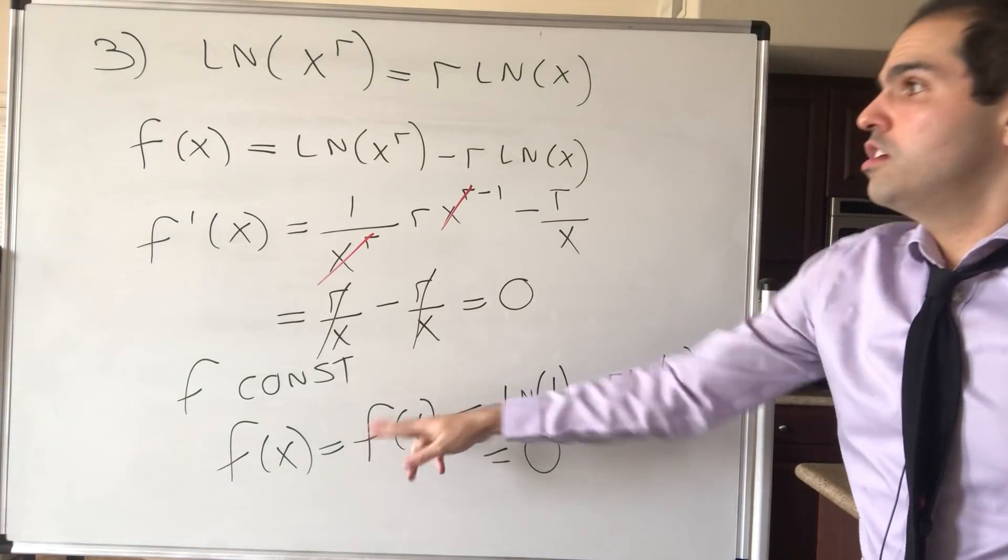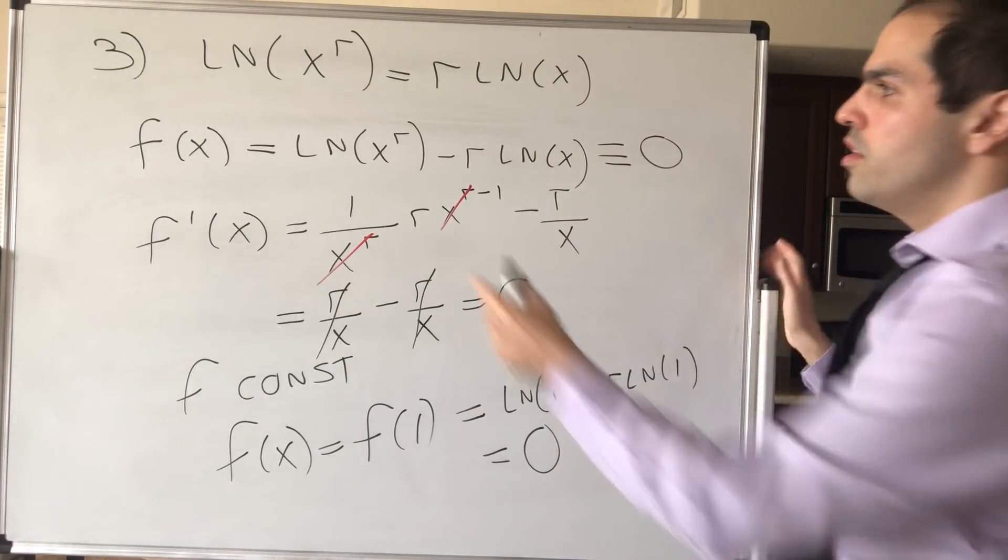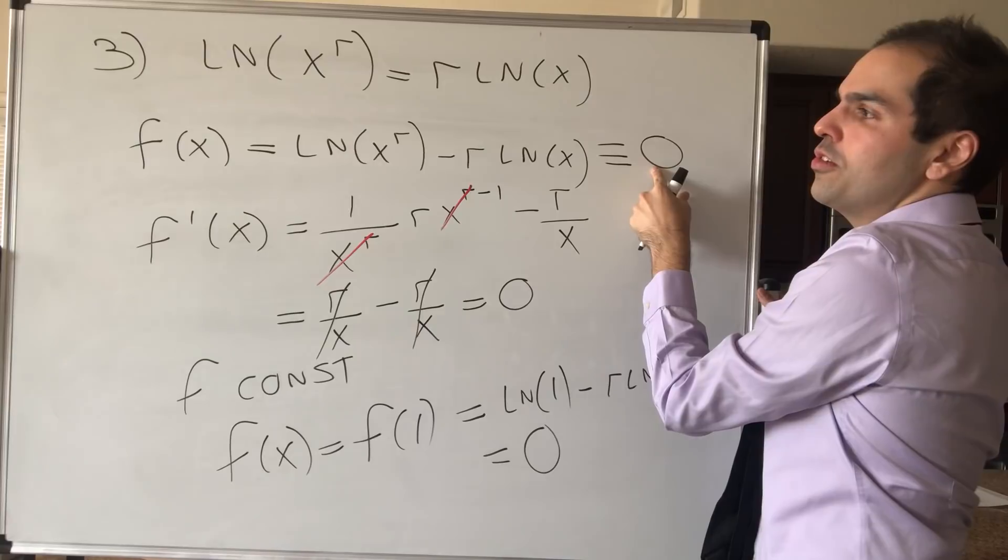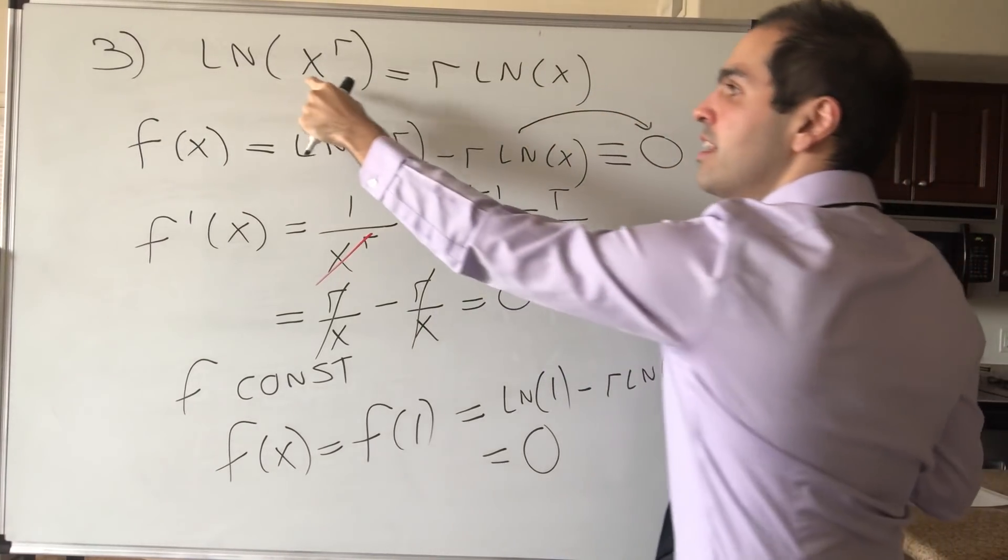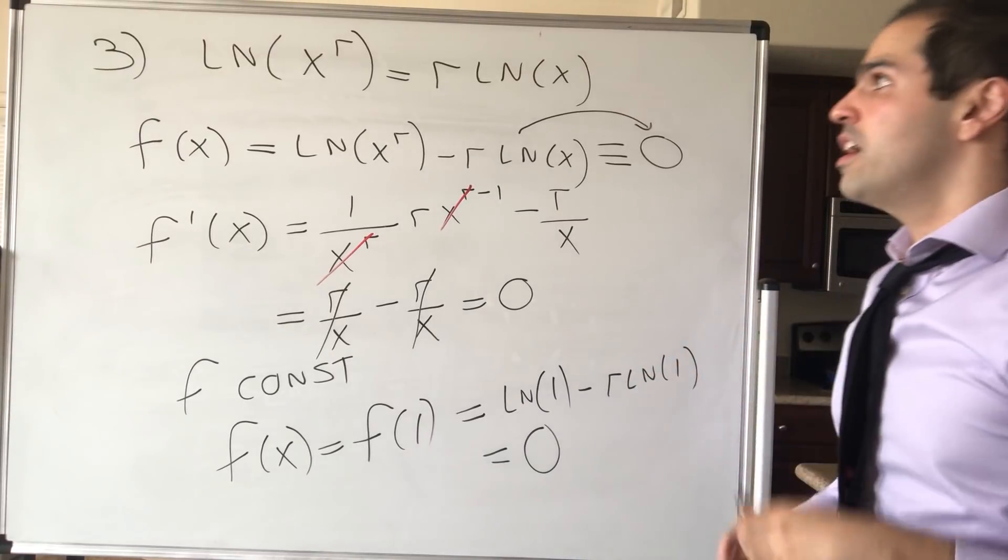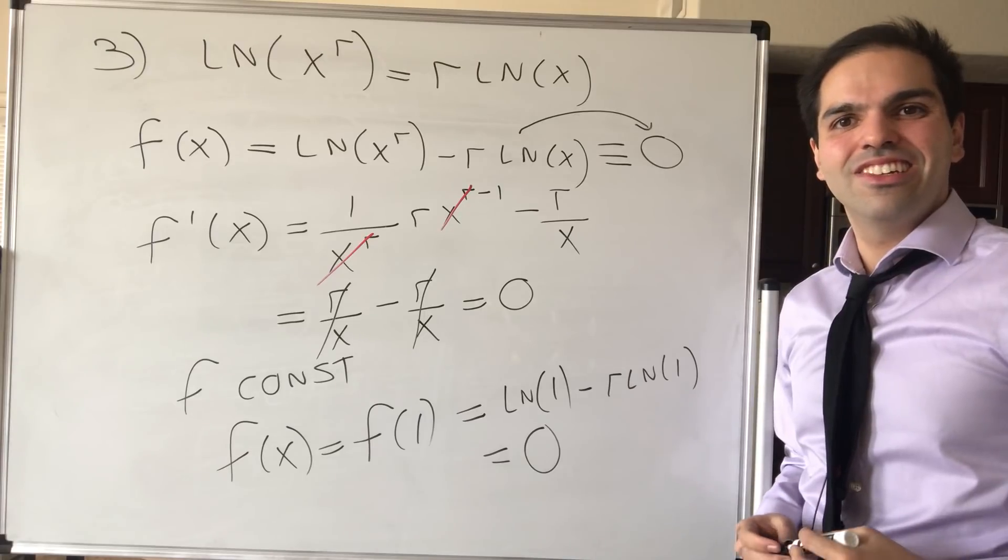So in particular, this function f is identically equal to 0, so this minus this equals 0, and last but not least, if you put this on the right-hand side, you get ln of x to the r equals r ln of x, and this is the last property of logs we needed to use.